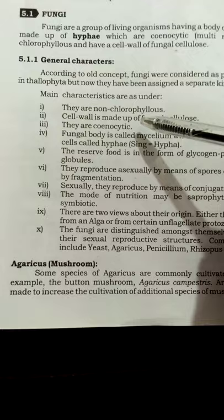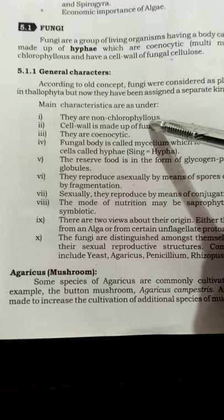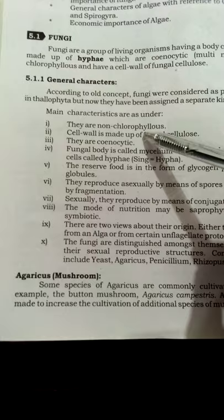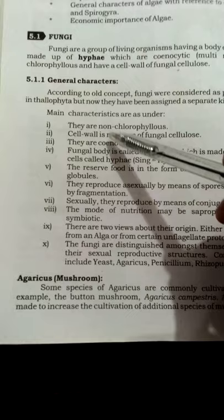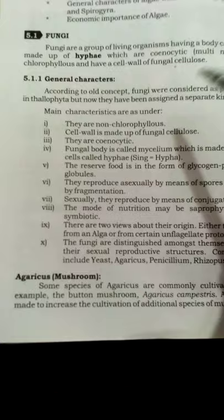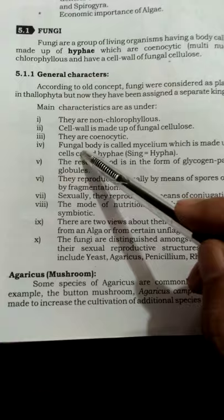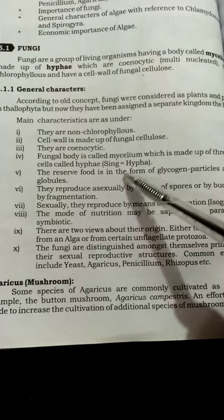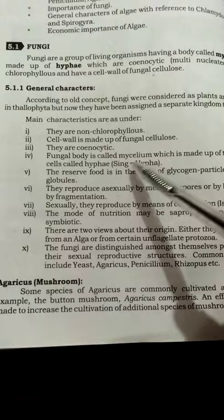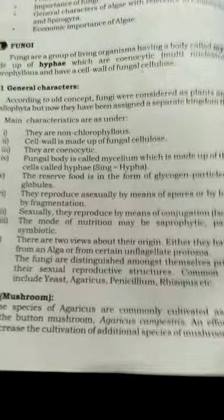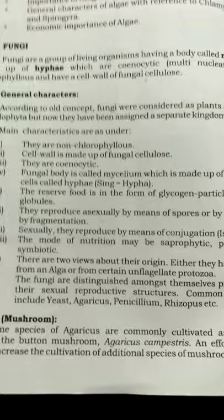The main characteristics of fungi: they are non-chlorophyllous. Their cell wall is made up of fungal cellulose. They are cenocytic — as explained earlier, cenocytic means multi-nucleated, having more than one nucleus. The fungal body is called mycelium, which is made up of thread-like cells called hyphae. 'Hypha' is the singular form; hyphae is plural. These thread-like cells are multi-nucleated.